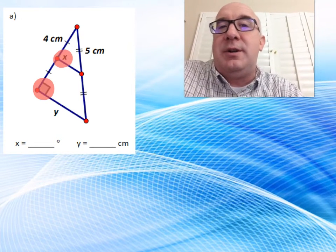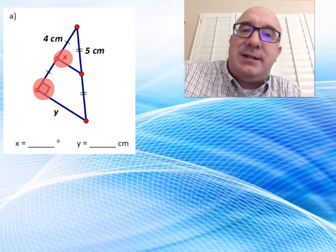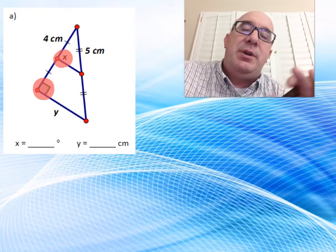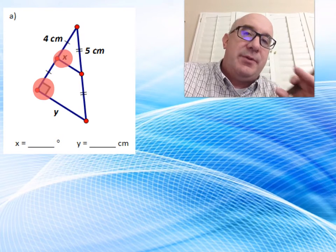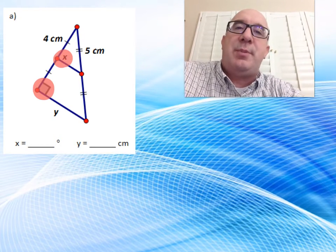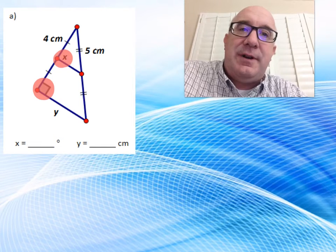So I guess the first thing to notice is that X has got to be 90. Remember in this relationship, because of those parallel lines, those are corresponding angles that are equal. So X is easy to find.